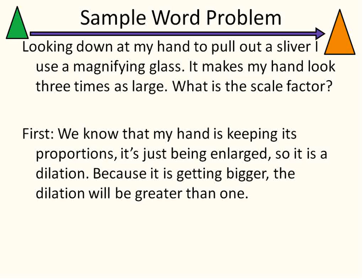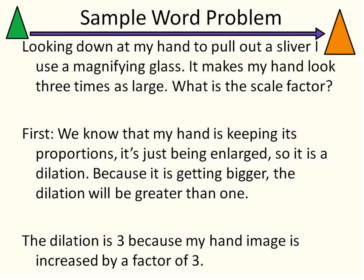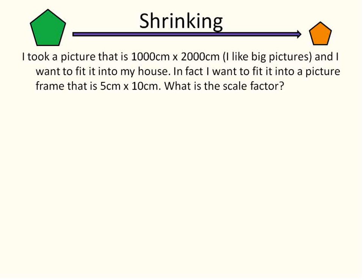Because it's getting bigger, the dilation will be greater than one — more specifically, the absolute value of the dilation is greater than one. We know it's getting three times larger, so the scale factor is three, because my hand image is increased by a factor of three. That's how we solve that type of word problem using dilation.